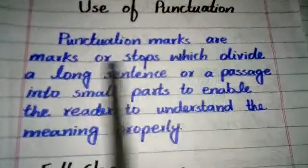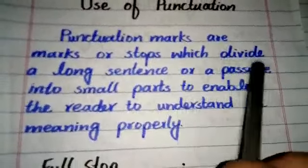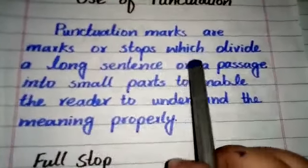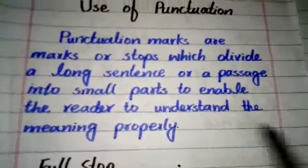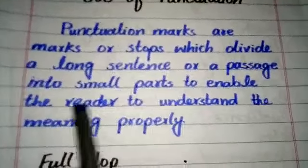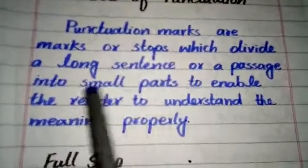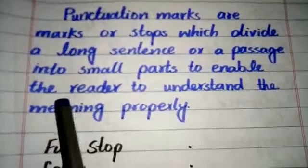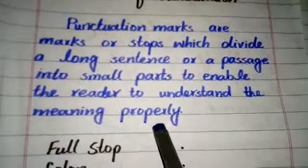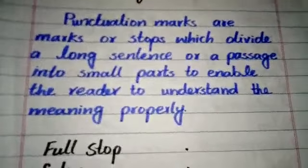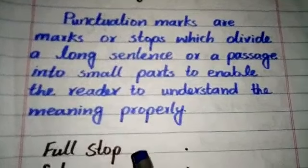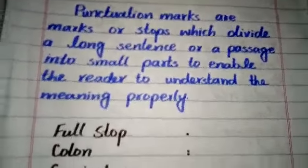The definition of punctuation marks is: punctuation marks are marks or stops which divide a long sentence or passage into small parts — nozeh ukaaf — to enable the reader to understand the meaning of that sentence or passage properly.